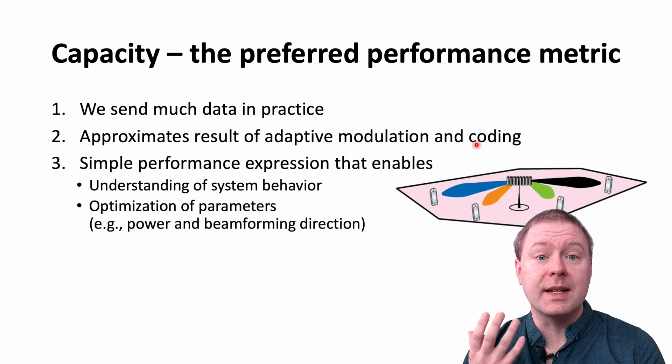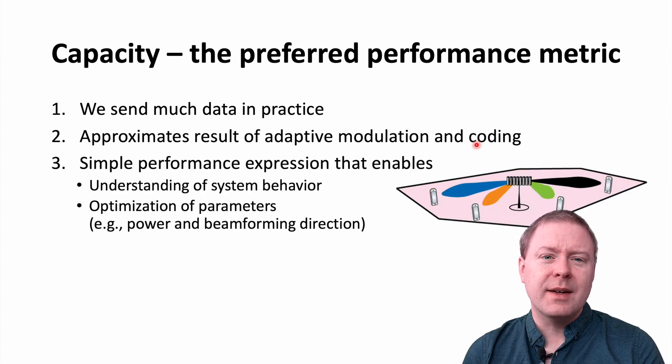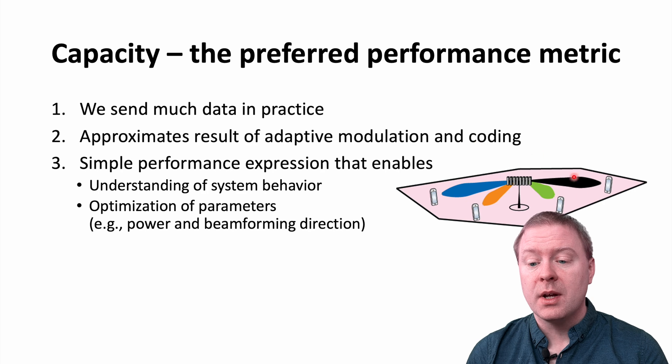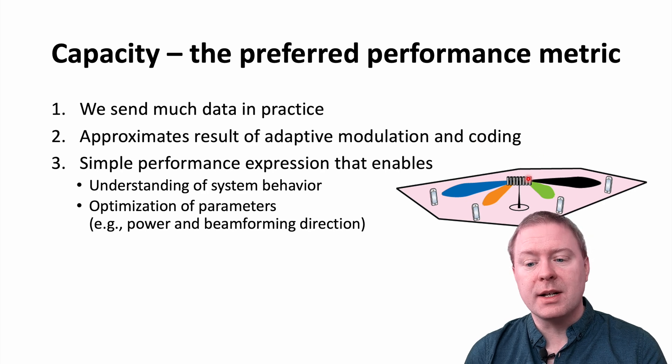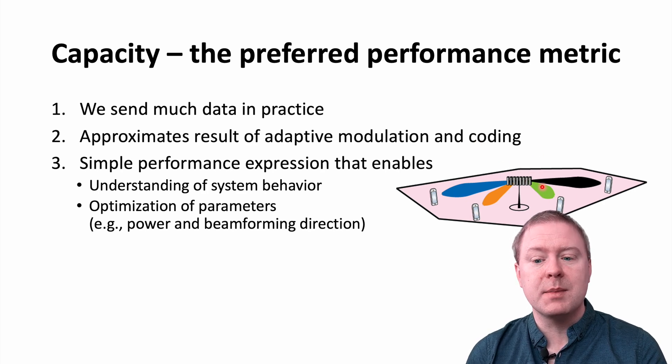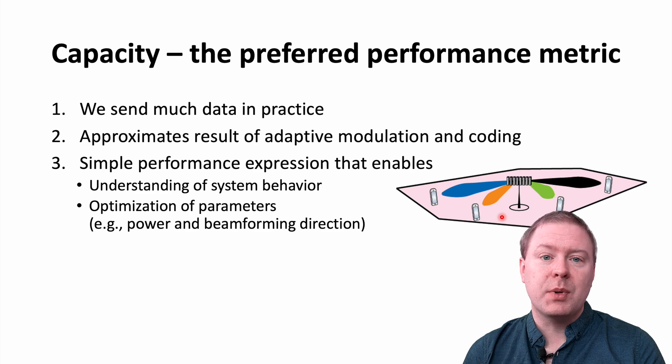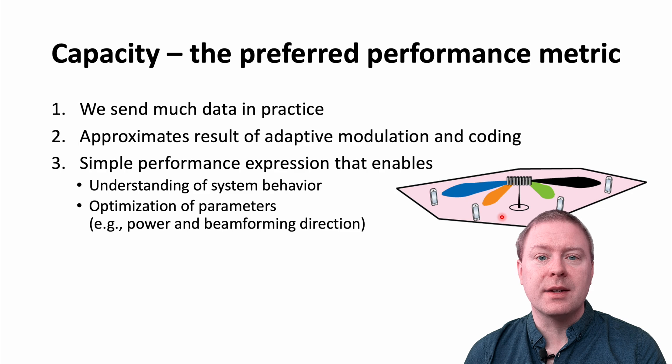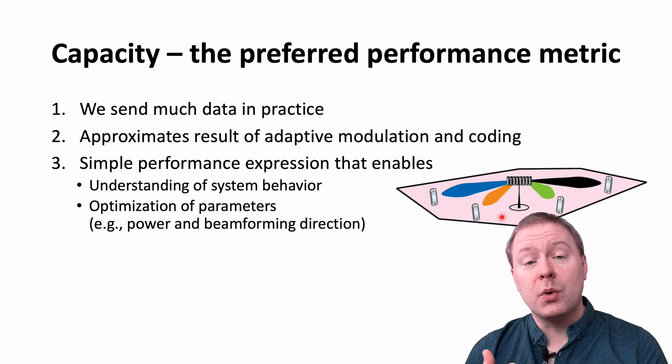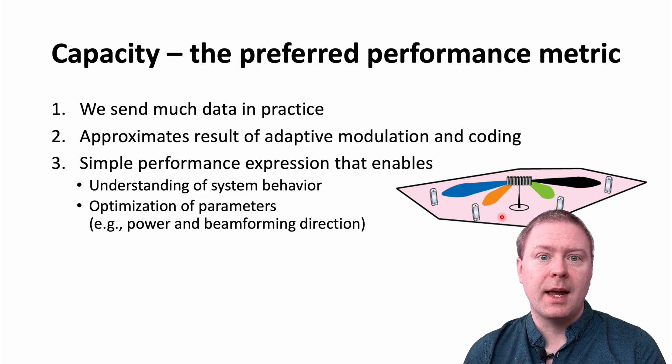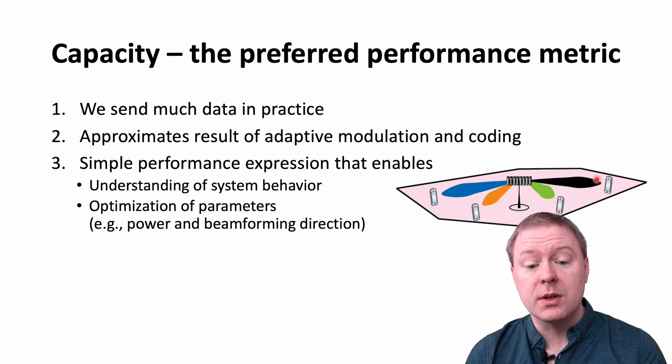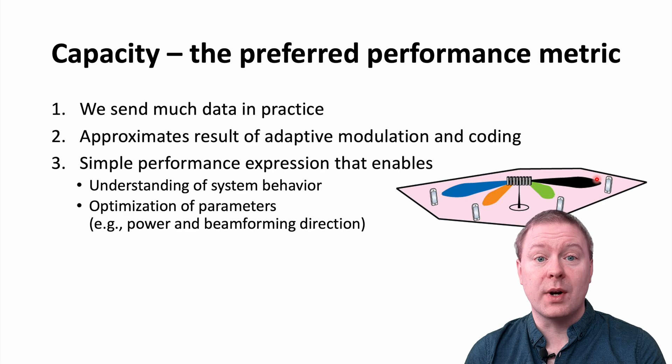The third point is that the capacity expressions are relatively neat and easy to understand. We started from the log₂ of 1 plus SNR formula, which is very simple, but even in more complicated scenarios with multiple antennas at base stations serving multiple users at the same time using beamforming, we can get expressions for the capacity of the individual users that are fairly easy to understand, where you see how different parameters affect the performance. And then you can optimize those parameters, such as how you divide power between users and how you pick the directions in which you are transmitting.